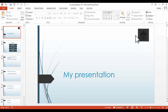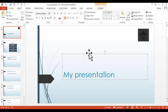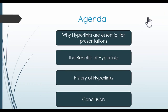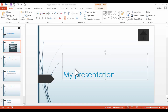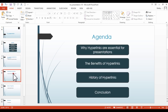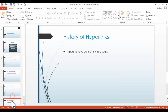Right, so now our home button is in slide 1. And from here, if we do an F5 to enter slideshow mode, what we can do is if we click our button, it takes us to the agenda slide. So if we press Escape to exit this, now what if we actually wanted to apply our home button to all of our slides — what could we do?